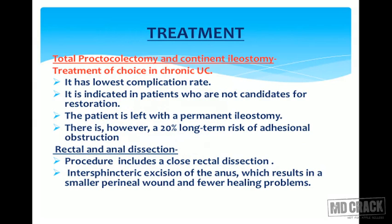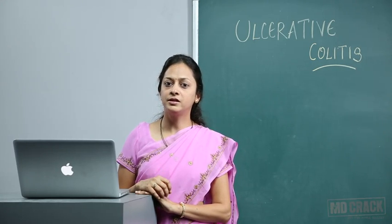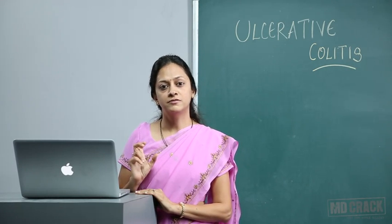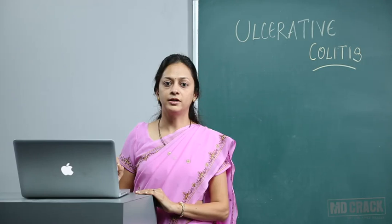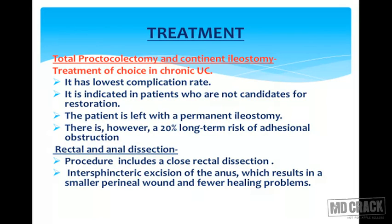The surgical treatment of choice in chronic ulcerative colitis is total proctocolectomy with continent ileostomy — this is a favorite exam question. It has the lowest complication rate and is indicated in patients who are not candidates for restoration. The patient is left with a permanent ileostomy, which is a disadvantage, and there is a 20% long-term risk of adhesional obstruction.